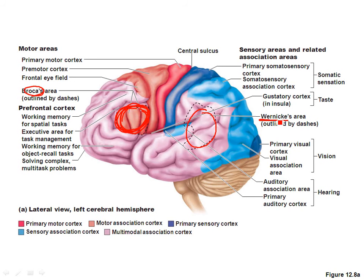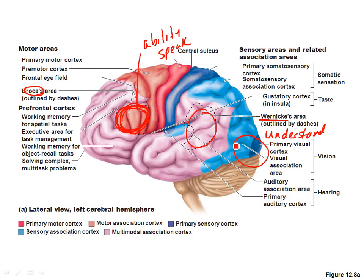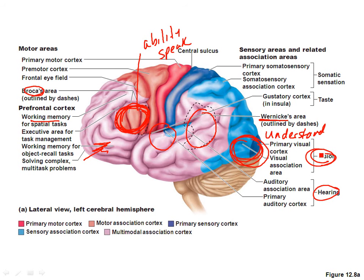Wernicke's area has to do with language understanding — not only spoken but also written. So Broca's area is the ability to produce speech, and Wernicke's area is where you understand language. Over time, different areas have been found to be associated with different functions. One region is primarily for vision, another for hearing. You don't have to know exactly which area does what, but it's important to know that different parts of the brain do different things. That's why if someone has a head injury in a certain area, they may have problems with memory or vision — damage to certain parts of the brain can damage certain functions.